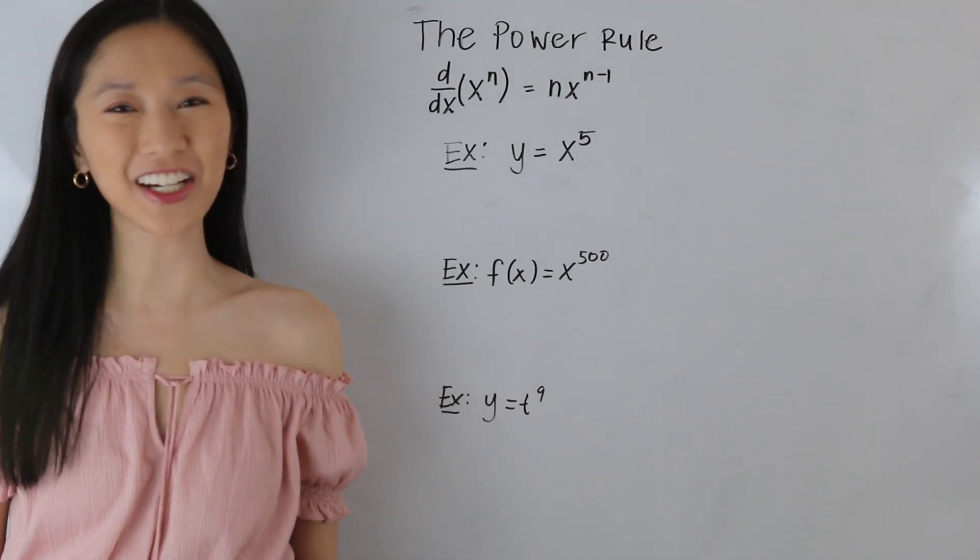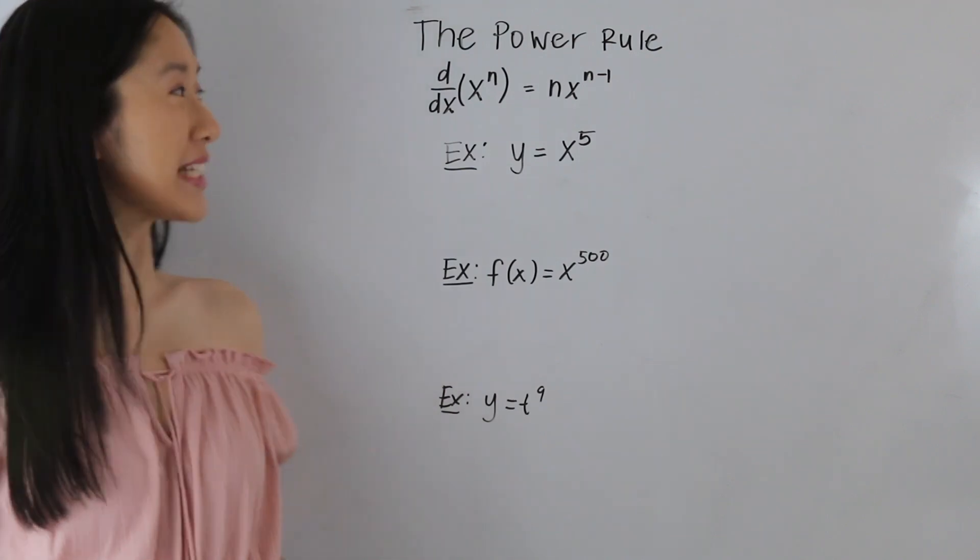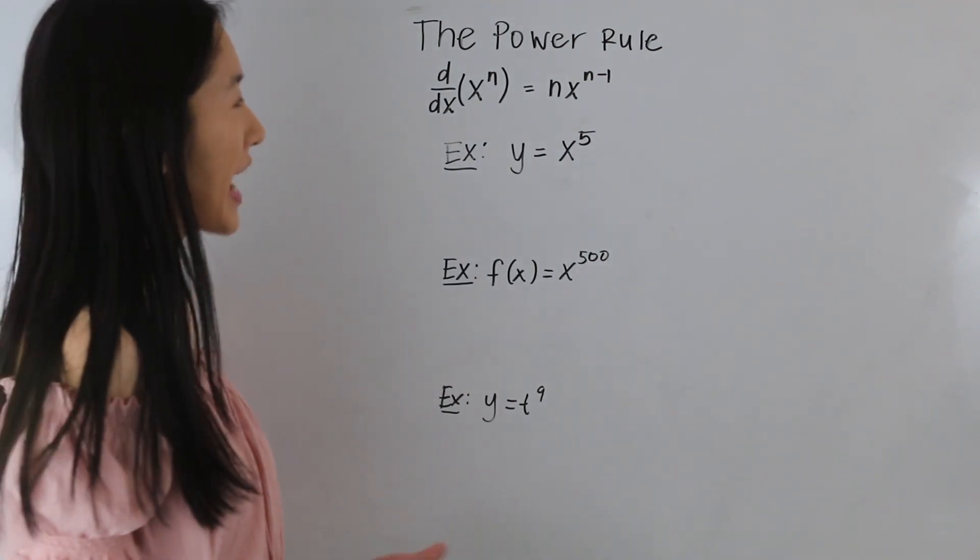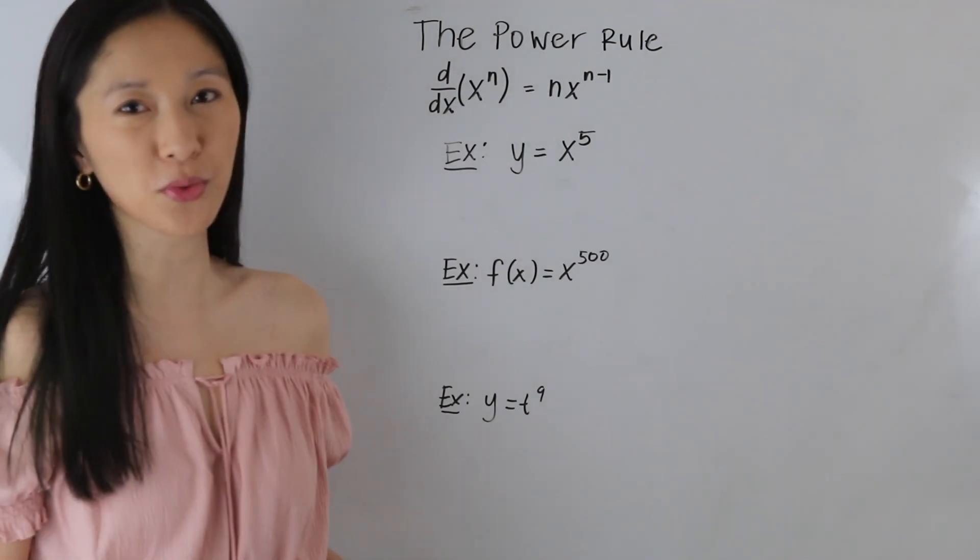Hey guys, it's Janine here, and in today's video we are going to be learning about the power rule. And so what the power rule tells us is that when we take the derivative of something of the form x to the n, it is equal to n times x to the n minus 1.